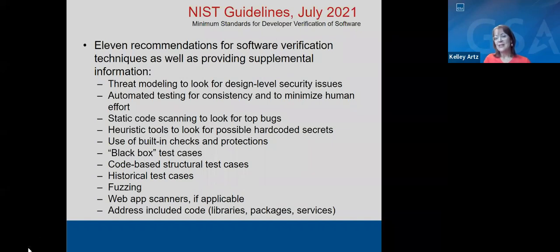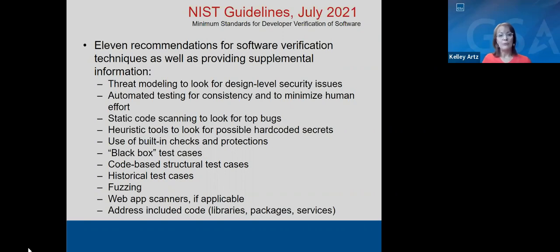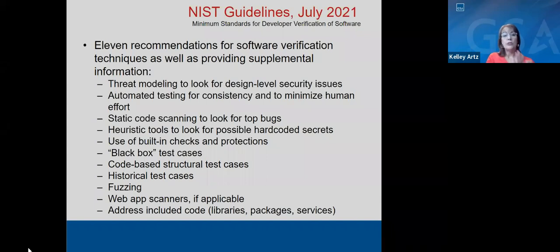NIST published guidelines shortly after the EO in July 2021. There are 11 recommendations for software verification techniques. Since then, they've also published a table that maps the cyber EO requirements for software to their secure software development framework.